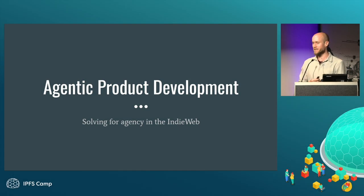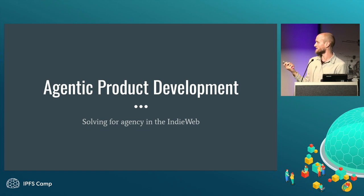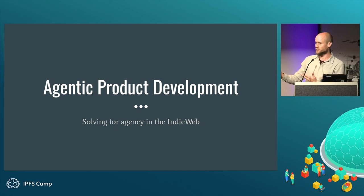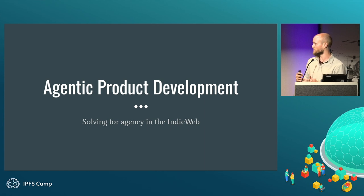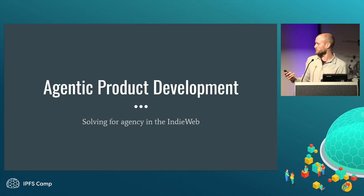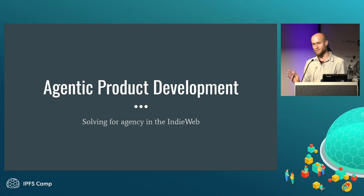My name is Alan. I'm going to be talking about agentic product development — really more of our journey into it. We're not going to get so much into the principles we're starting to formalize as part of our development in this space. What we're doing is trying to solve for agency in the web. We're going to get to the peer-to-peer stuff eventually, but I'm going to take you on a little journey first on how this all got started.